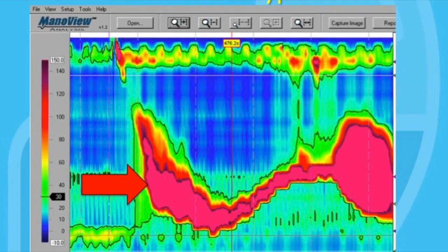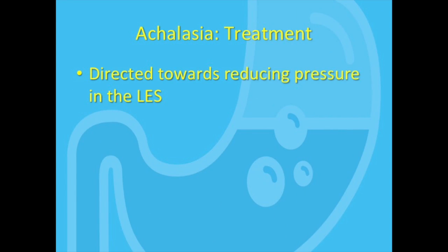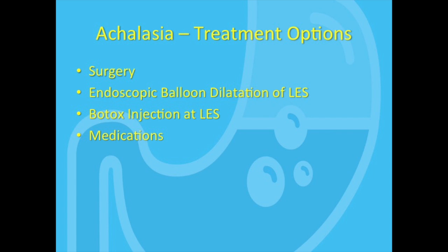Thanks for that clarification. Let's move on to talk about treatment options for achalasia. All of them essentially focus on making the lower esophageal sphincter relax with swallows so that food can pass into the stomach. Unfortunately, there is nothing we can actively do to bring back peristalsis, however some recent studies have shown that in a minority of patients, peristalsis can partly return once the obstruction at the LES is relieved. Broadly speaking, there are four treatment options: surgery such as a Heller myotomy plus or minus a fundoplication, endoscopic pneumatic balloon dilation of the lower esophageal sphincter, Botox injection to the LES, as well as medications.